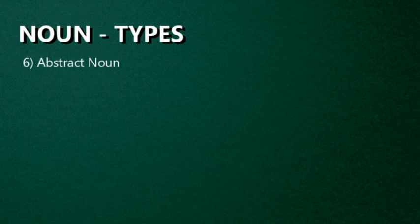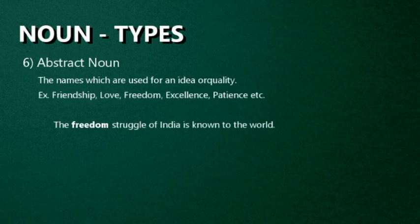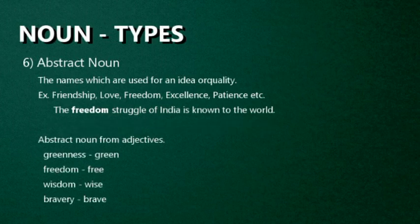Sixth one: Abstract Noun. The names used for an idea, quality, concept, or condition are known as abstract nouns. Abstract nouns are not physical substances — they don't have physical existence. Examples: friendship, love, freedom, excellence, patience. Friendship does not have physical existence; it's a feeling, it's a quality. For example: The freedom struggle of India is known to the world — freedom is the abstract noun. Many abstract nouns are derived from adjectives: greenness from green, freedom from free, wisdom from wise, bravery from brave.